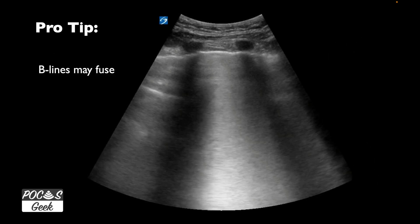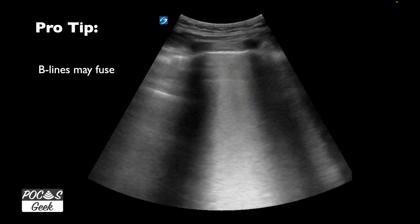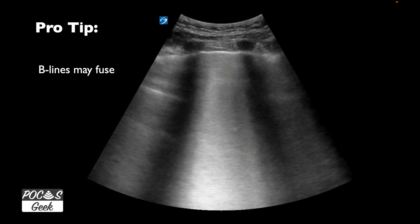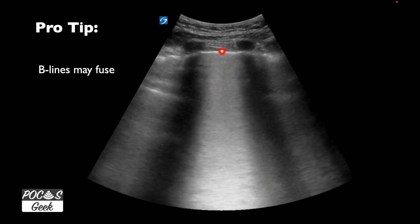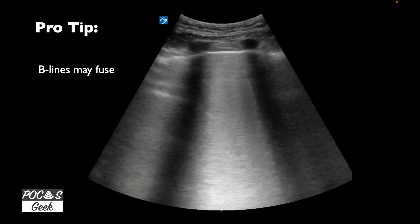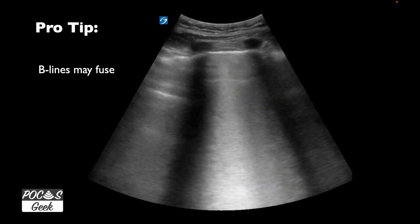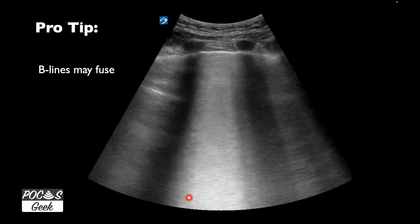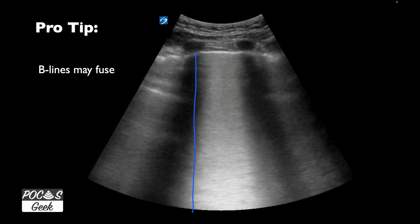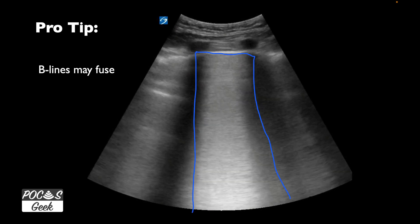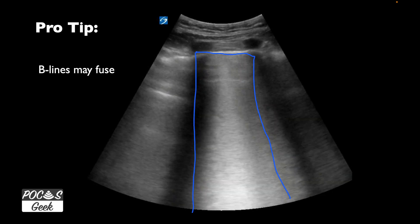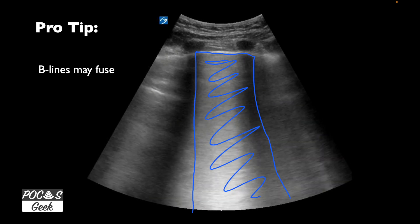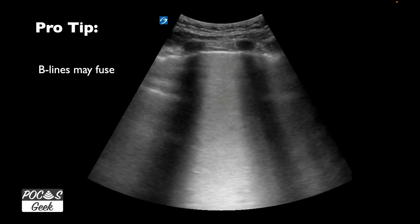B-lines can start to join together and coalesce. In some images you'll almost see B-lines within a rib space becoming one large B-line — this is called the waterfall sign, where the entire rib space lights up as one big B-line. Keep in mind that this is still pathological.